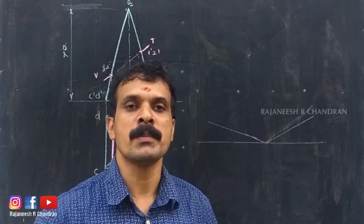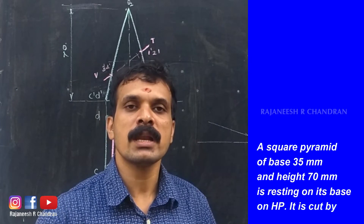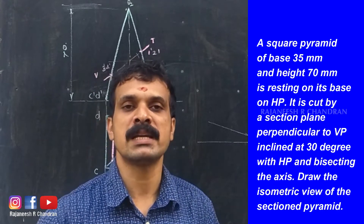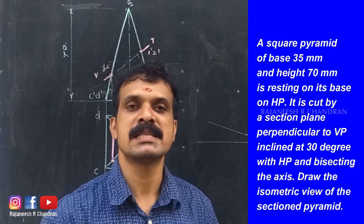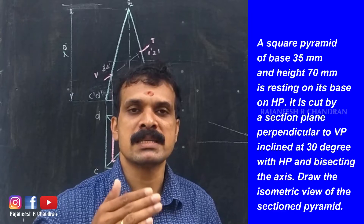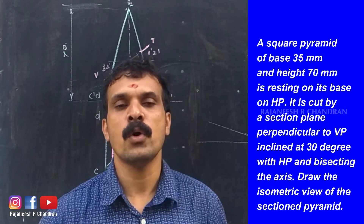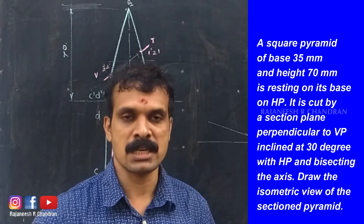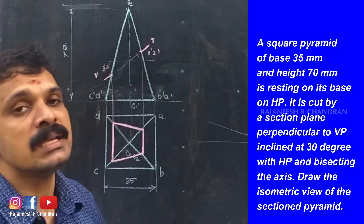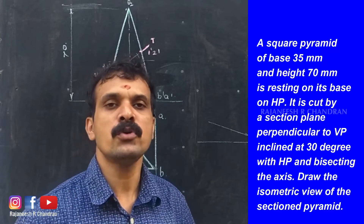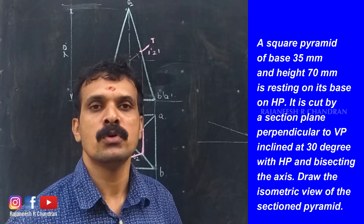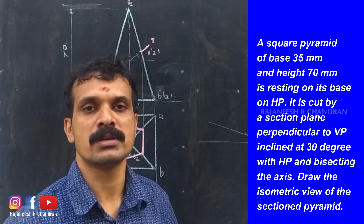The problem is: a square pyramid of base 35 mm and height 70 mm is sectioned or cut by an auxiliary inclined plane which is perpendicular to VP and inclined at an angle of 30 degrees with HP. We have to obtain or construct the isometric view of the sectioned solid.